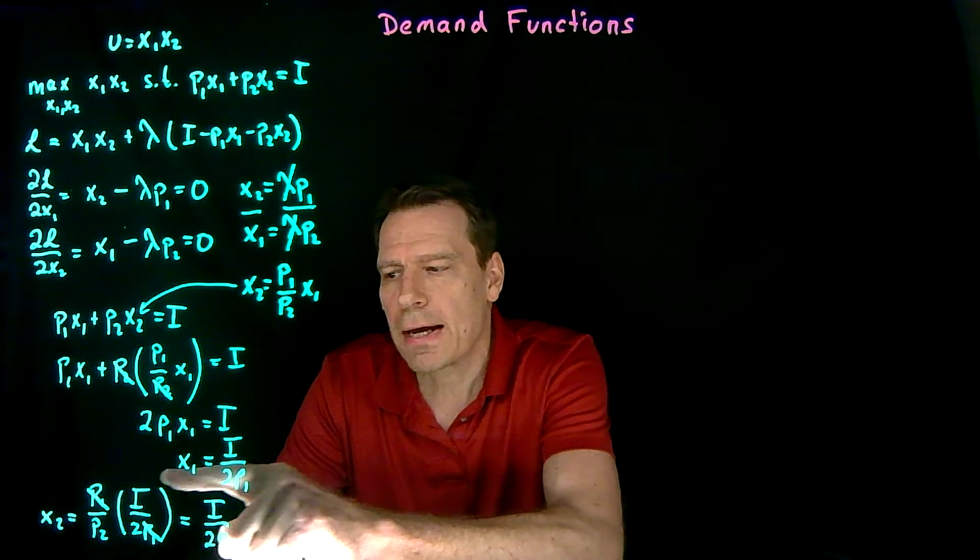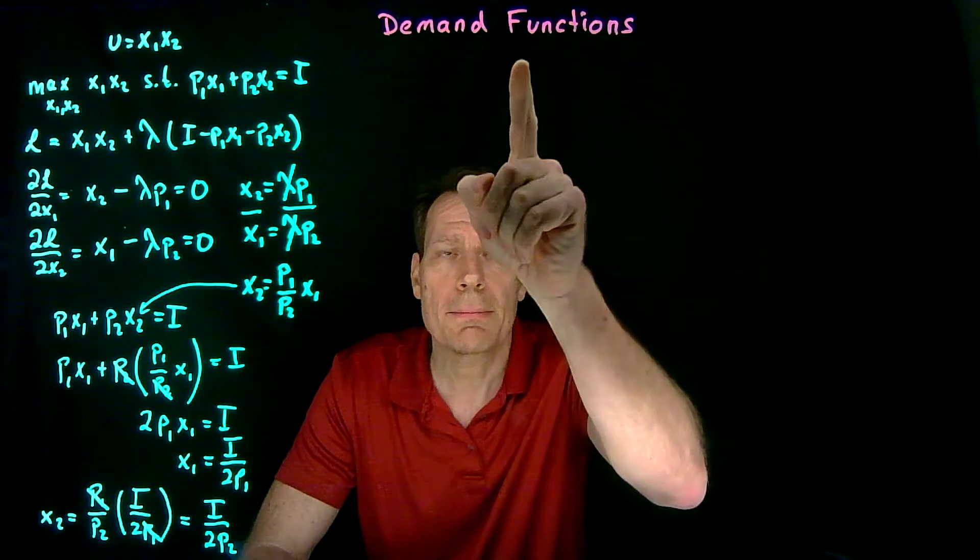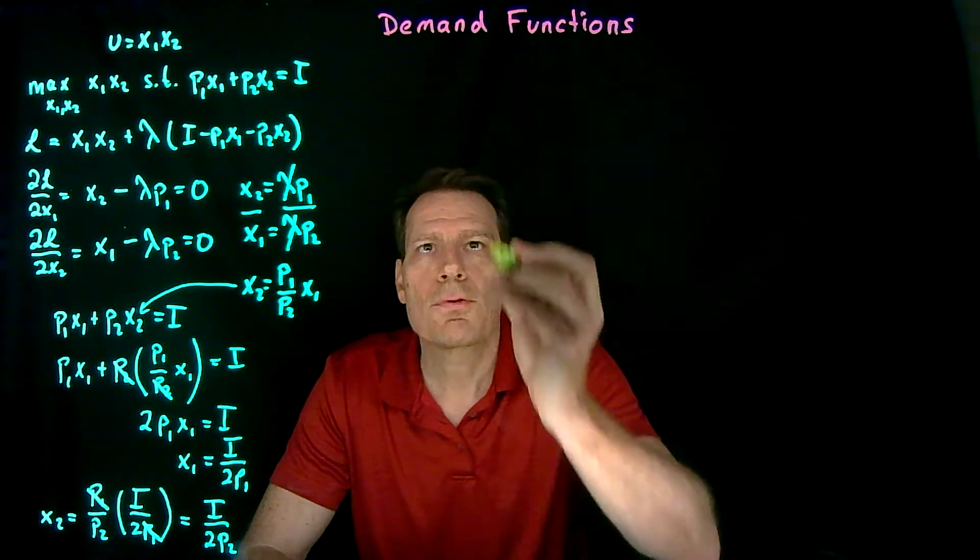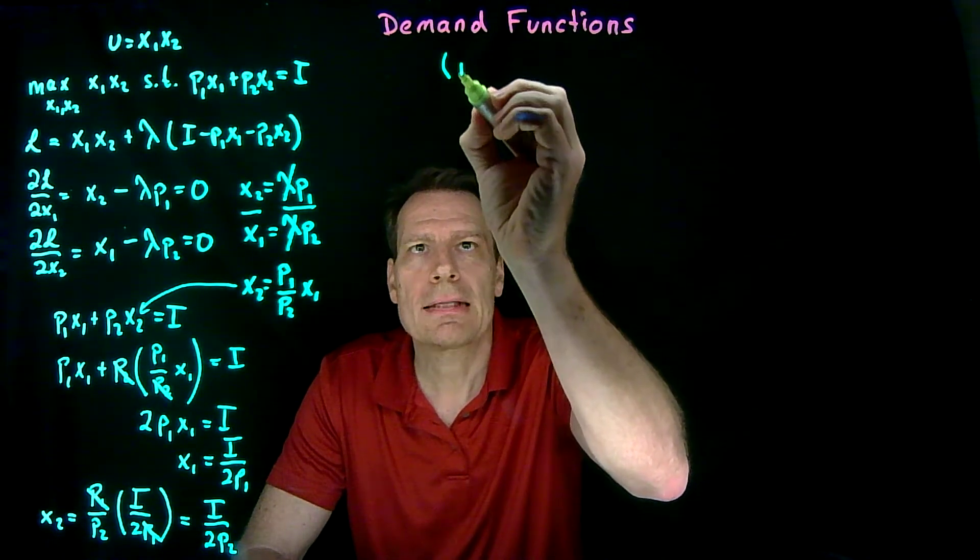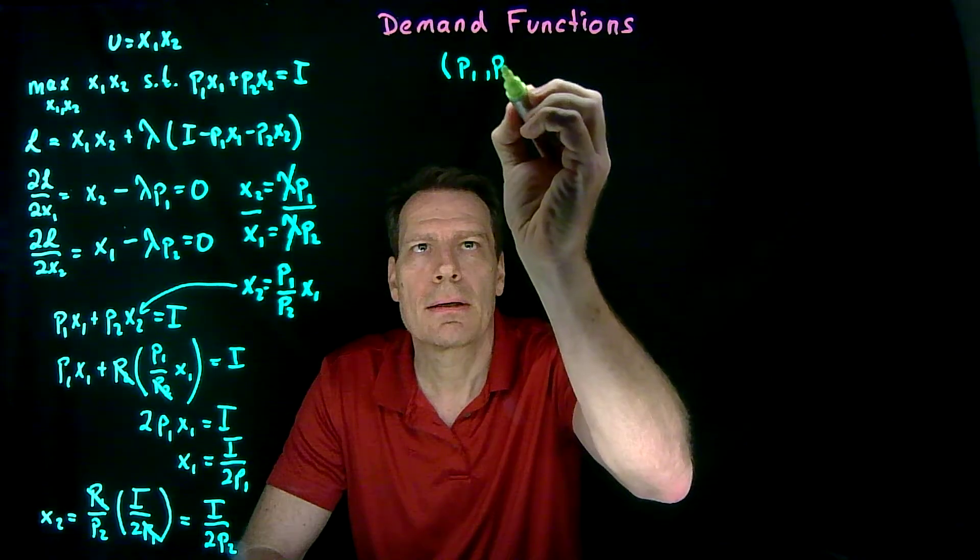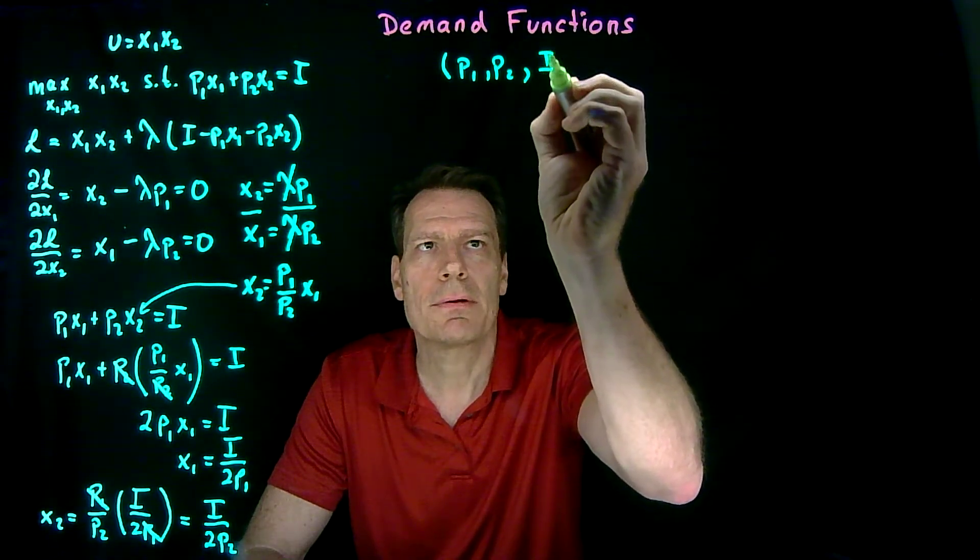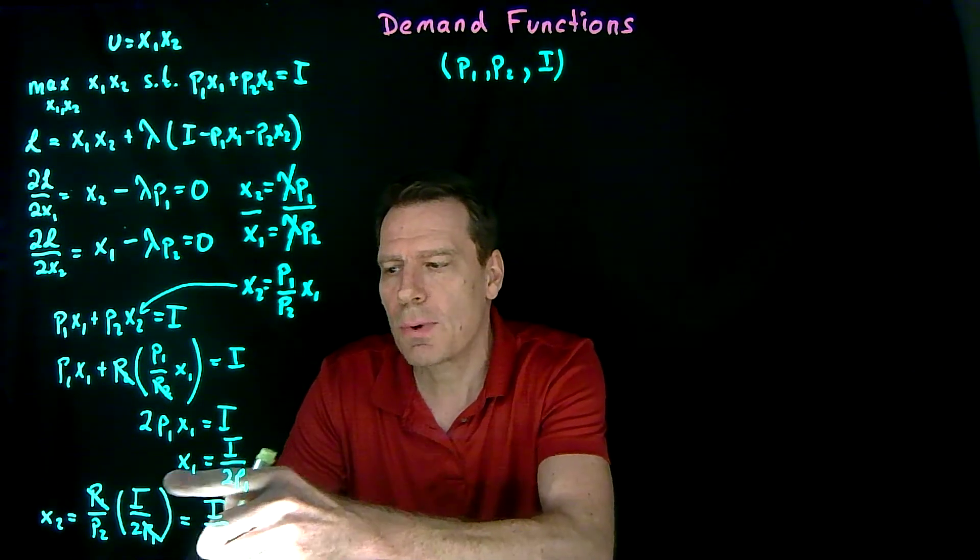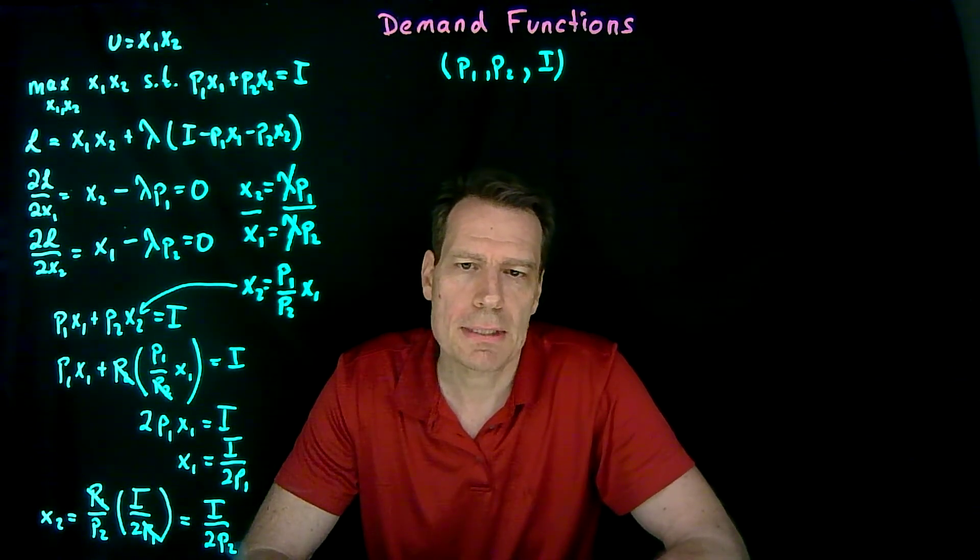These functions for x1 and x2 are called our demand functions. They tell us for any economic environment, for any set of prices and any income level, how much of x1 and x2 our consumer is going to consume if she optimizes.